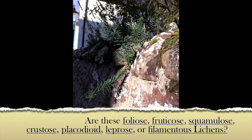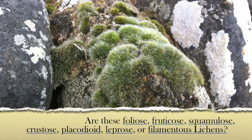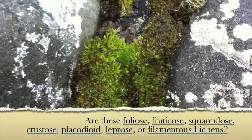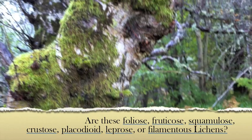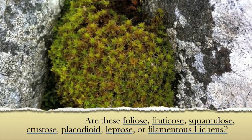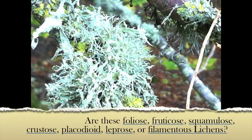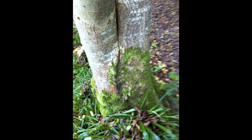Foliose lichens are lichens with leafy lobes which spread out in a horizontal layer over the surface. They are attached by root-like threads and can be easily removed with a knife. Fruticose lichens are shrubby forms with many branches and can be removed from the surface by hand.